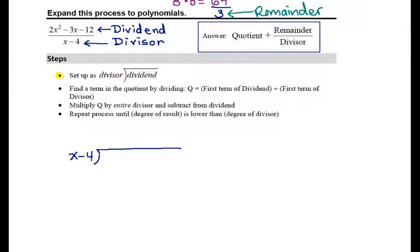And the dividend is 2x squared minus 3x minus 12. So, just like in my numeric example, I started by looking at the beginning of the divisor. I'm going to do the same thing here, but